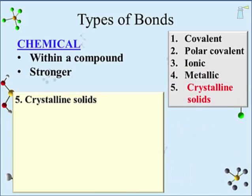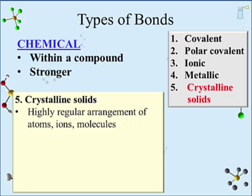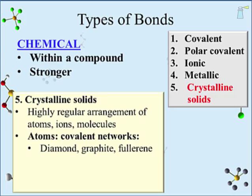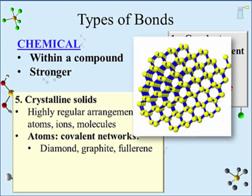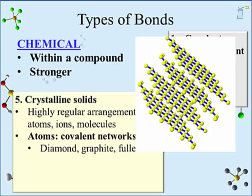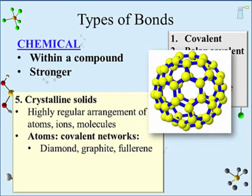The last type of bonding is a broad category called crystalline solids. These solids have highly regular arrangements of atoms, ions, or molecules. Non-metal atoms bonded as crystalline solids can form a covalent network. Carbon atoms form three different covalent network compounds arising from different highly regular arrangements of carbon atoms. Diamonds consist of a three-dimensional array of hexagons, making them incredibly hard. For graphite, the arrangement is in sheets — graphite is used in pencils since dragging it across paper lays down a sheet. A late 20th century addition is the fullerene, a spherical arrangement similar to a soccer ball.